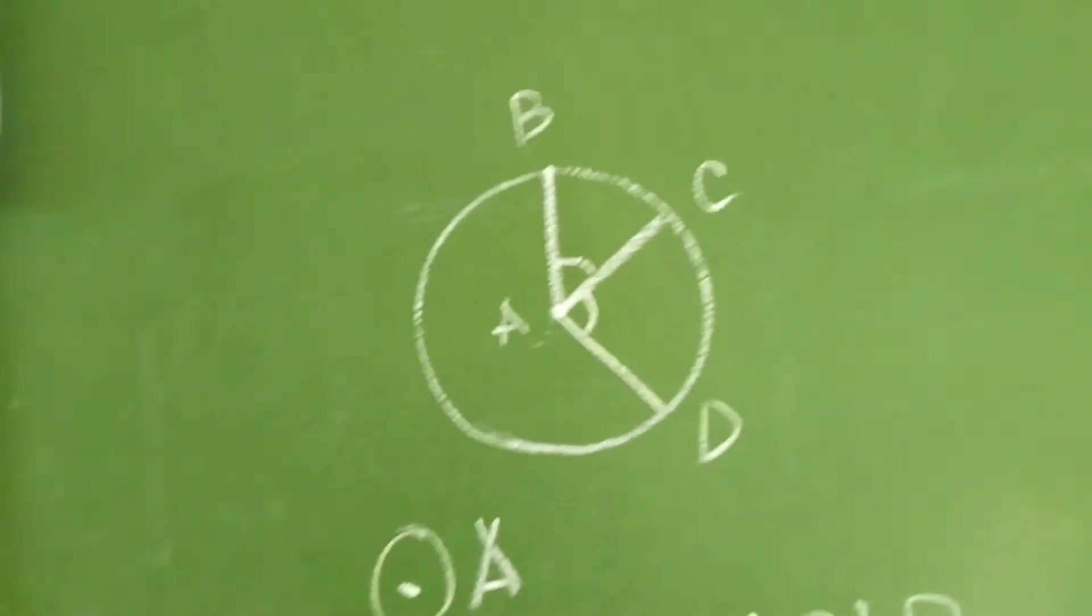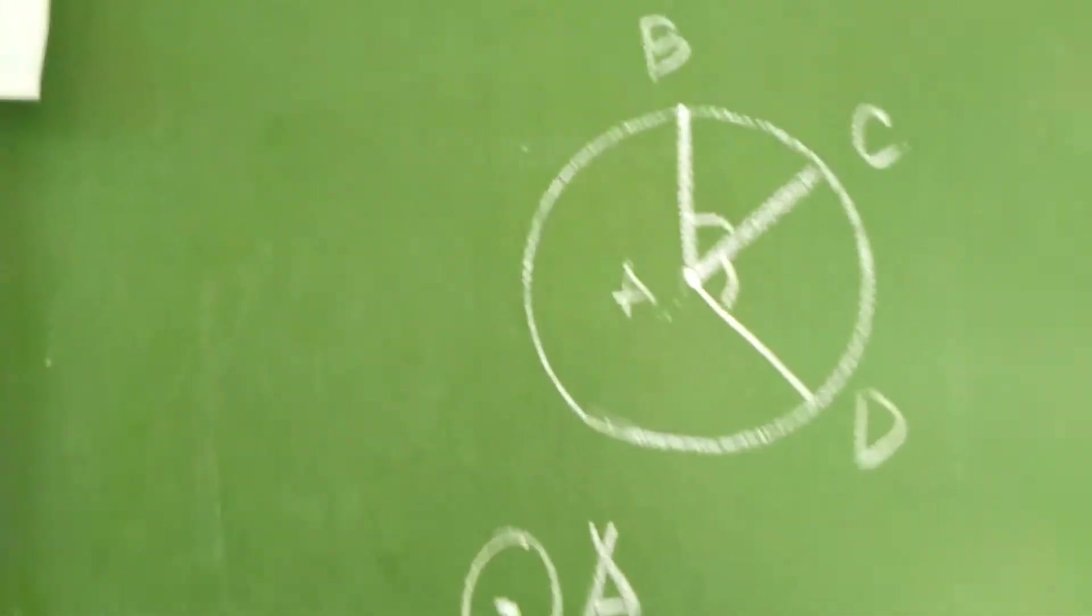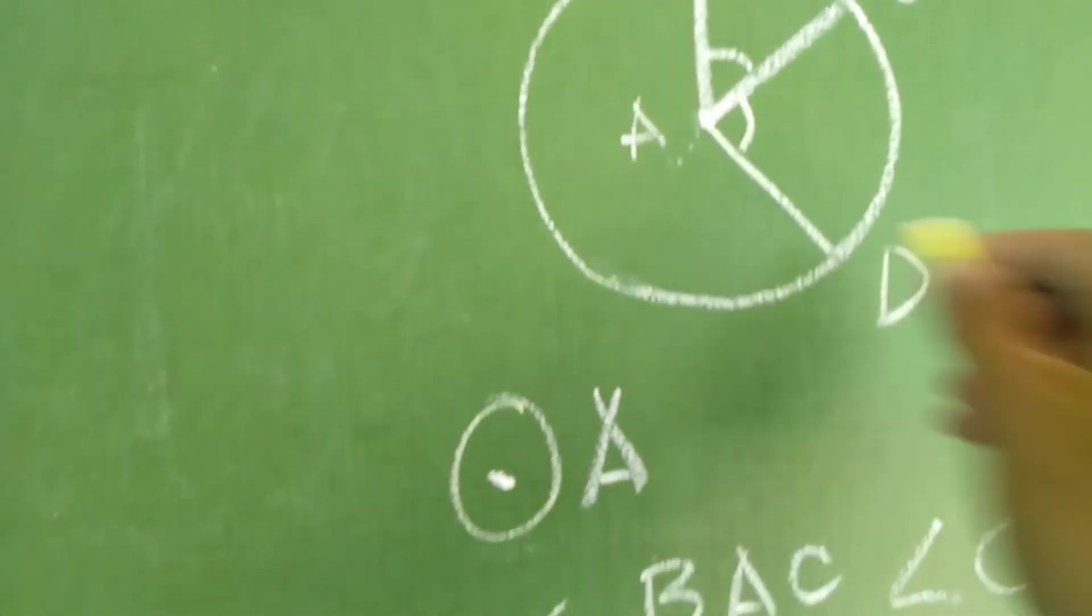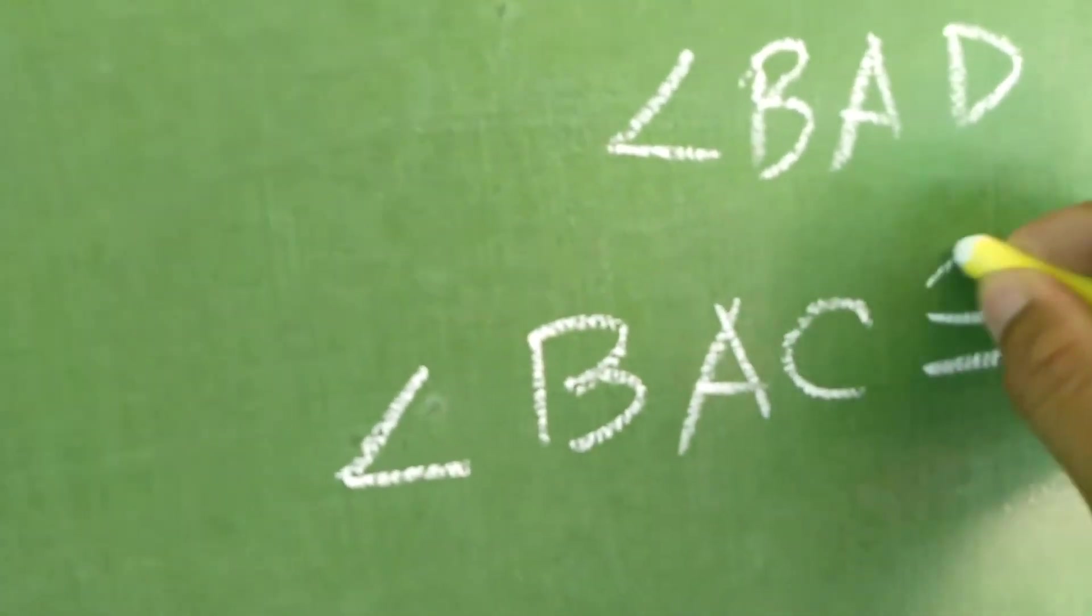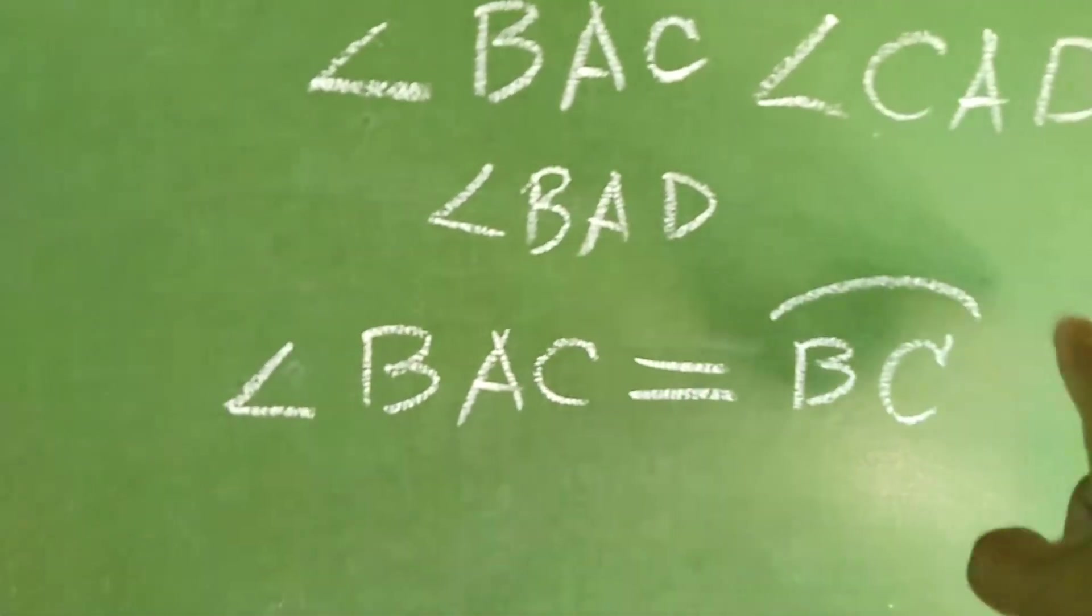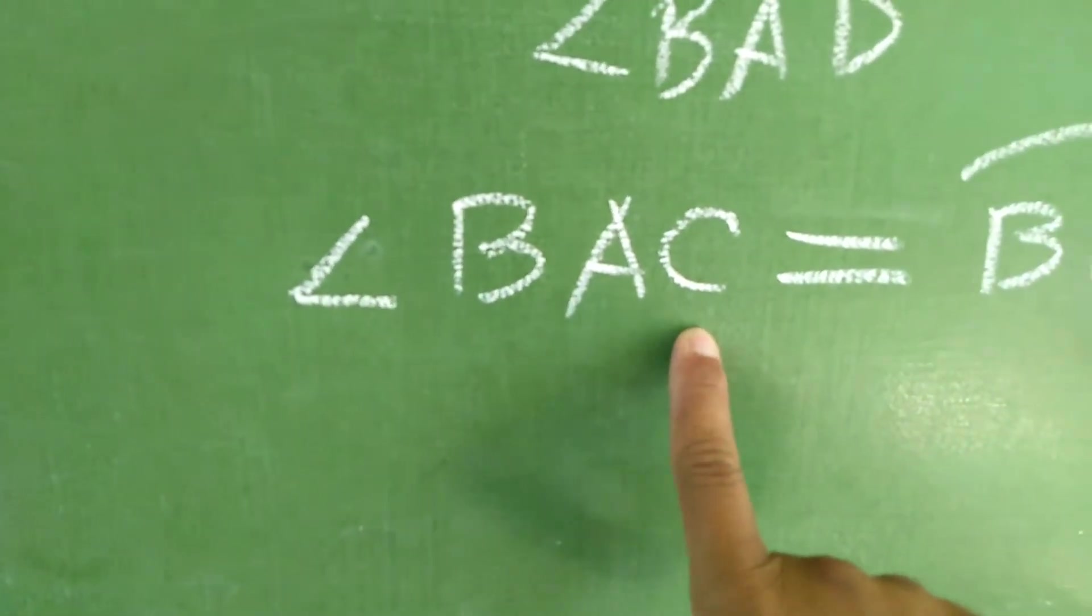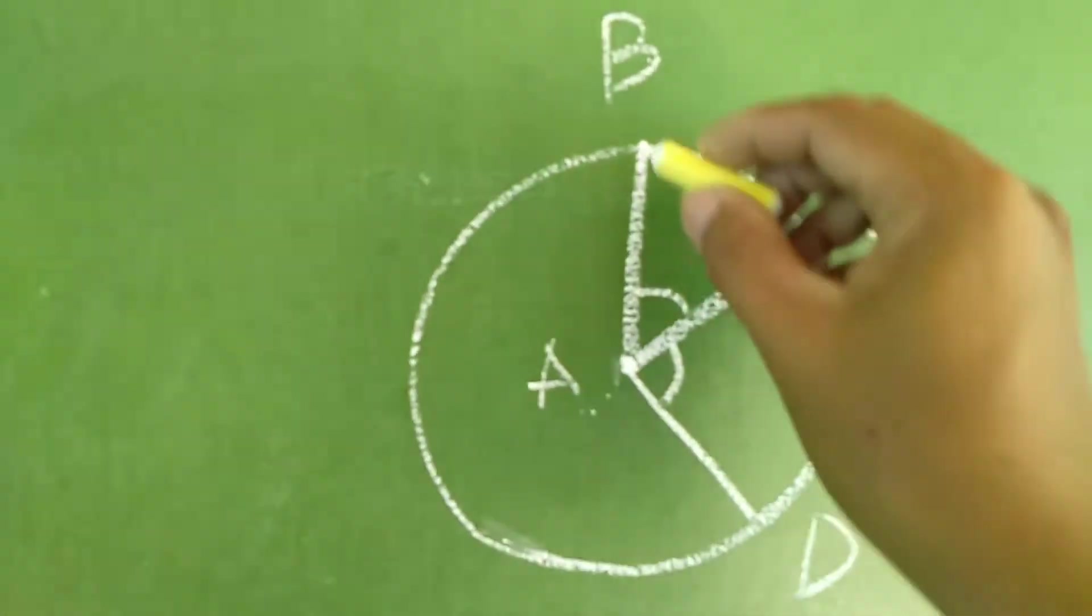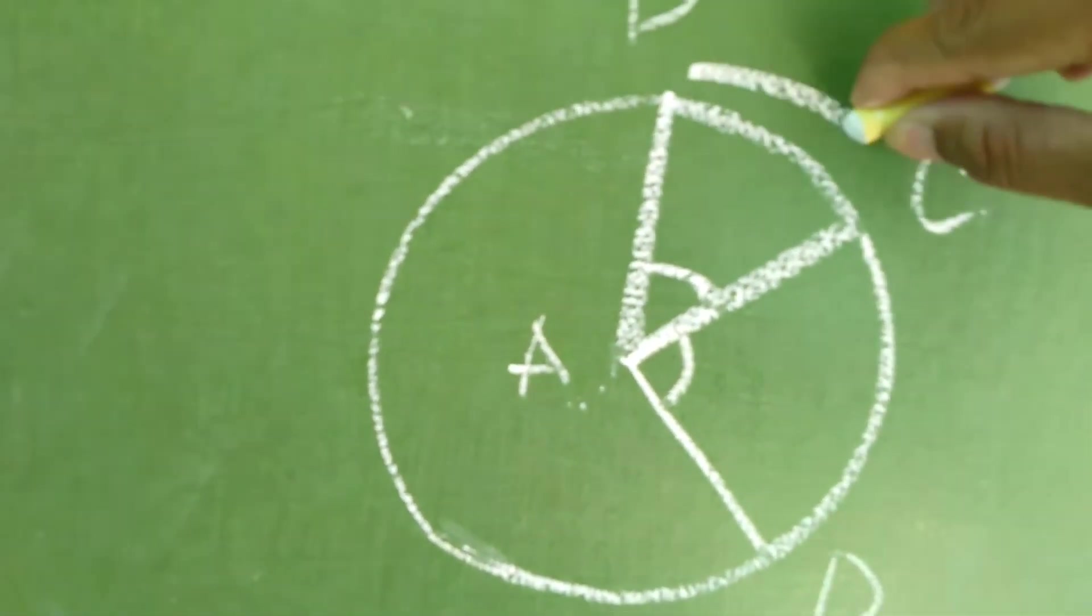Next, ang susunod naman po natin dito sa ating Central Angle topic na ito is eto po. Suppose this is an arc and this is also an arc. Tignan yung mabuti. Angle BAC is congruent or equal to BC arc BC. Ito, this is an arc. Yung medyo may pagano ng konti, no? Again, I repeat. Angle BAC is equal to arc BC.